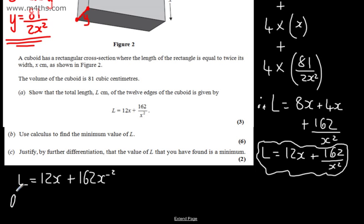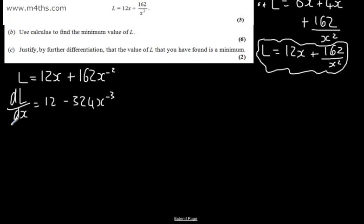So we can say now that dL dx, differentiating, we're going to have 12. Then we're going to have now, multiplying down, this is going to give me minus 324x to the minus 3. We can say for min, so writing this in, the minimum value, we can say that dL dx will be equal to 0. So all I'm doing at this stage is simply stating this for the minimum value.